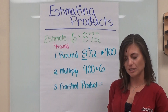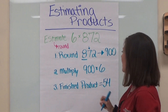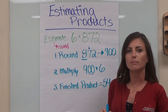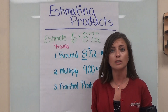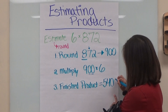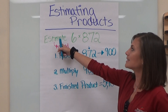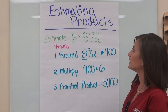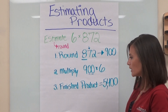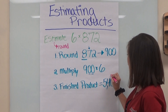54. Very good. So I put my 54 down. And then I have two zeros in my original factor, in my original question. Two zeros means I put two zeros at the end — one, two. So if I'm estimating six times 872, my answer is going to be 5,400.